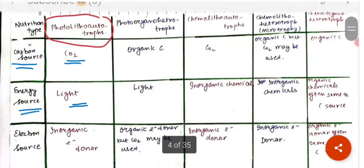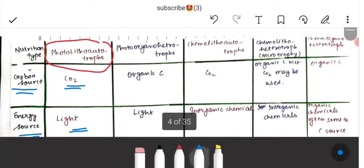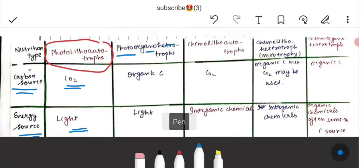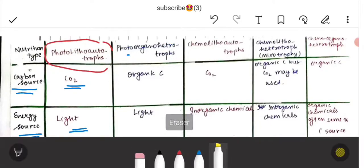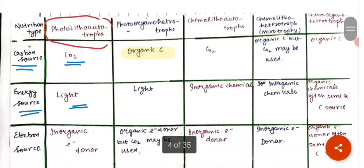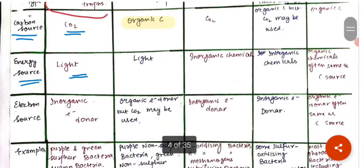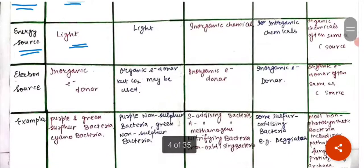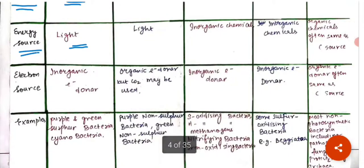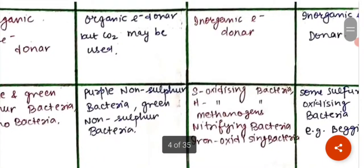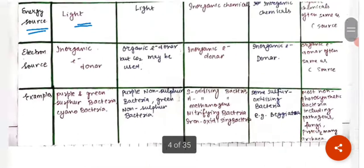The second category is photoorganoheterotrophs. They use organic carbon as the carbon source, light as the energy source, and an organic electron donor as the electron source — though CO₂ may also be used. Examples include the purple non-sulfur bacteria and the green non-sulfur oxidizing bacteria.